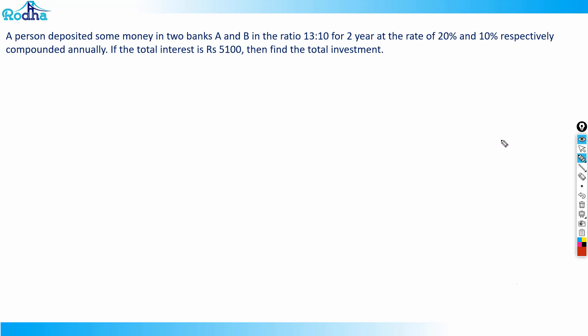Look at this question about compound interest—we can use allegation to solve it very efficiently. This is a good concept combining compound interest with allegation. We have studied in detail about allegation, weighted average, and the seesaw method. Now let's apply this to compound interest.